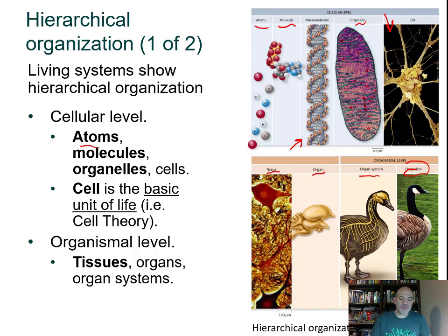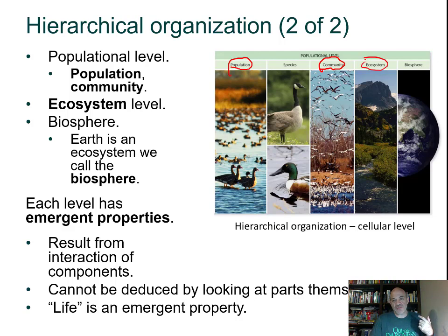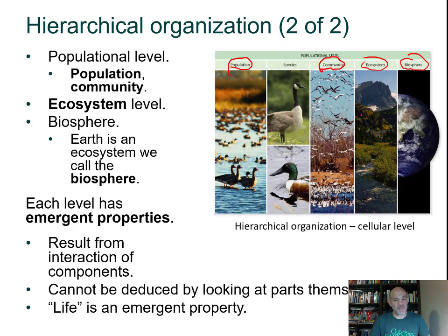In biology, we go beyond the individual organism. A population is many individuals of the same species living in an area. A community includes multiple species — for example, all the waterfowl in an area. Add the nonliving aspects like sunlight and water, and you have an ecosystem. Major ecosystems are biomes like deserts and rainforests, and all of those combine to form the biosphere.